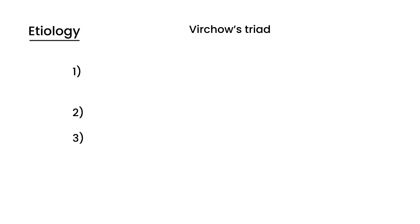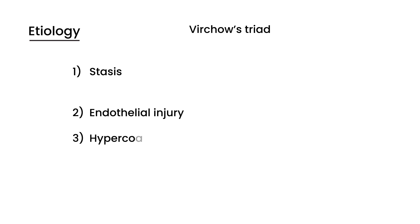Before I get into symptoms, I really need to talk about etiology because etiology is actually tested more often than symptoms. There's something very important to remember called Virchow's triad. As the name implies, it's three things that can cause DVT — that's the etiology, also known as the cause. This is very important because it's often tested more than any other aspect of DVT.